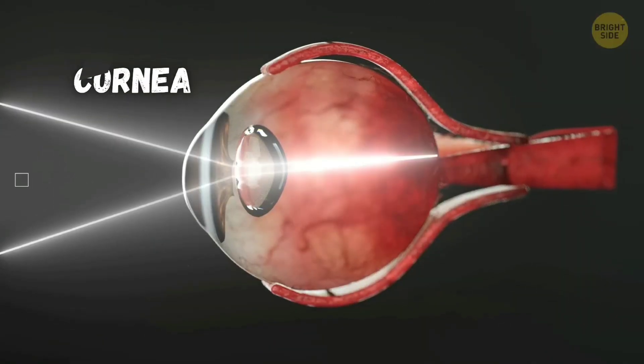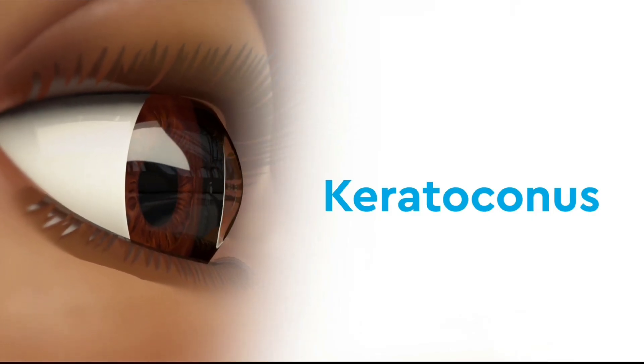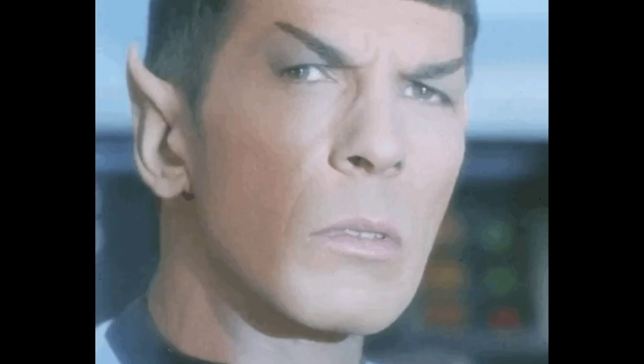Keratoconus happens when your cornea, the transparent outer layer of your eye, gets thinner and eventually bulges outward in a cone shape. Your vision may quickly get blurrier or distorted, and you may become more sensitive to light and glare. That can especially make it harder to see and drive at night.